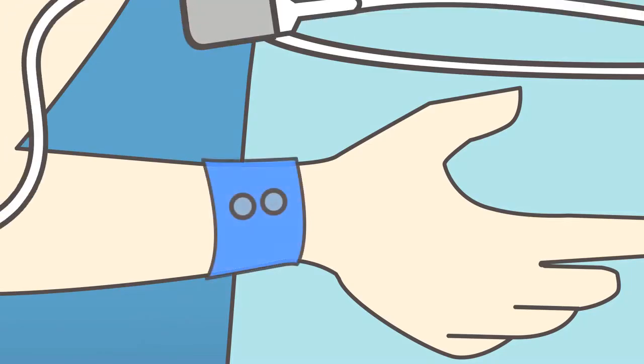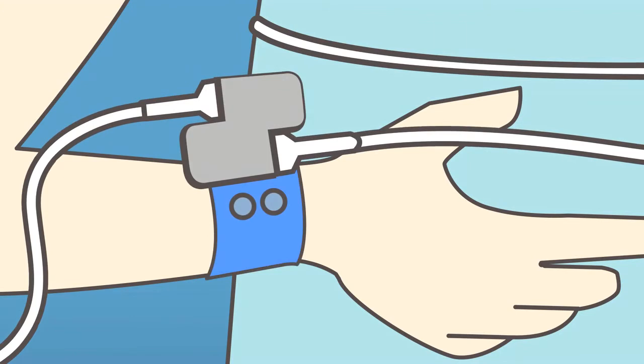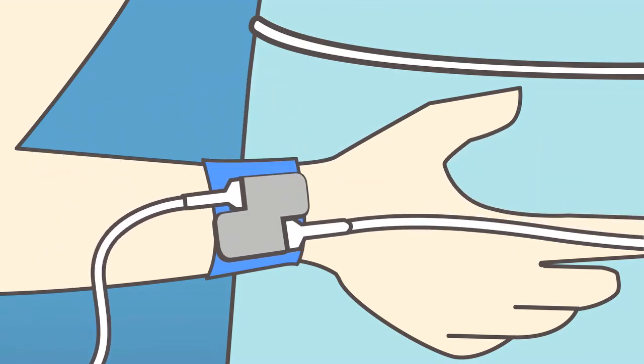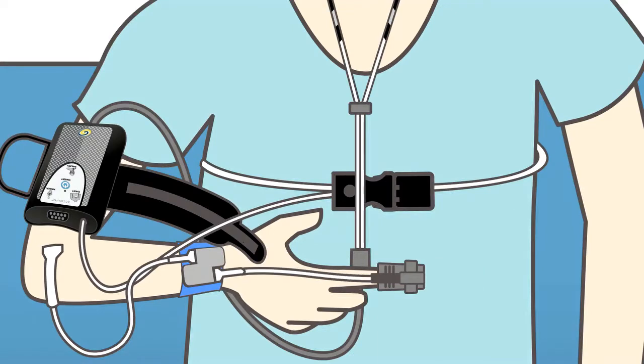Snap the chain of custody pod to the wrist bracelet that was put on by the clinician at your clinic. Place the finger sensor on any finger and plug the other wire of the chain of custody pod to the Accusom.